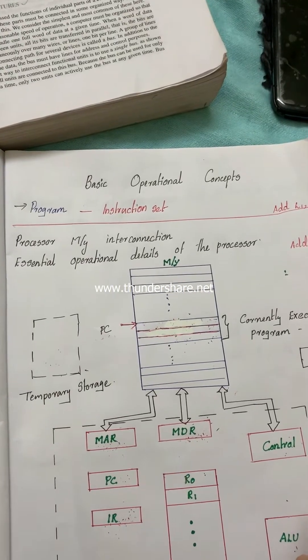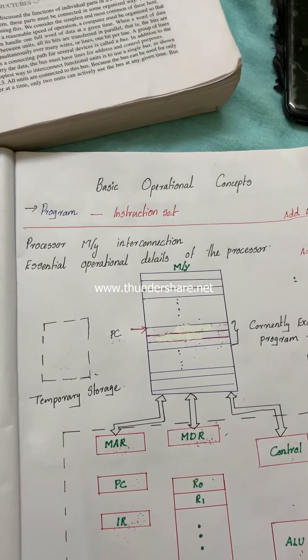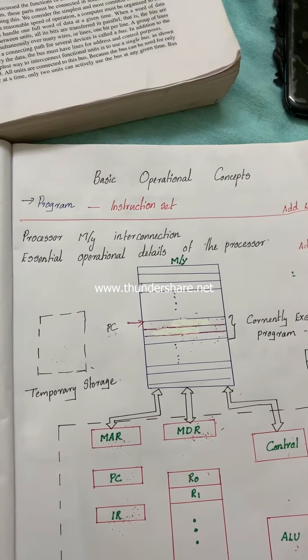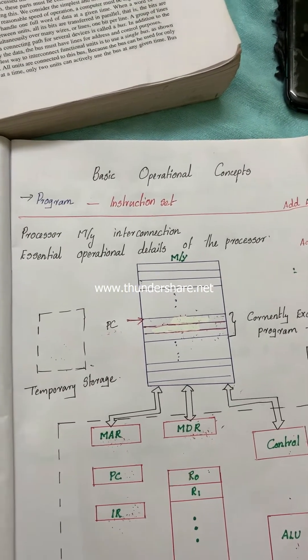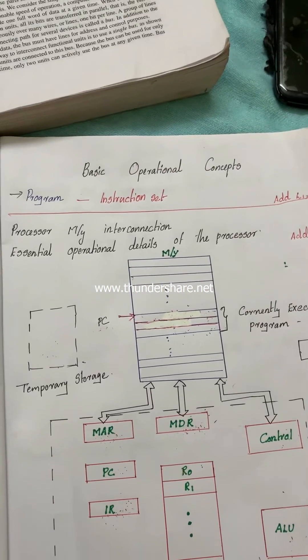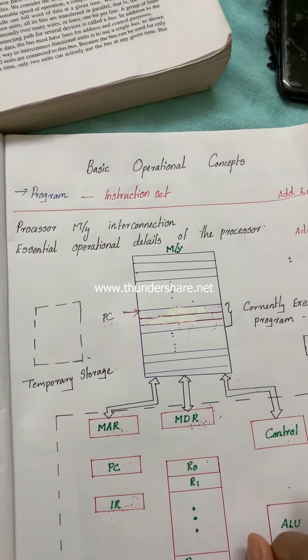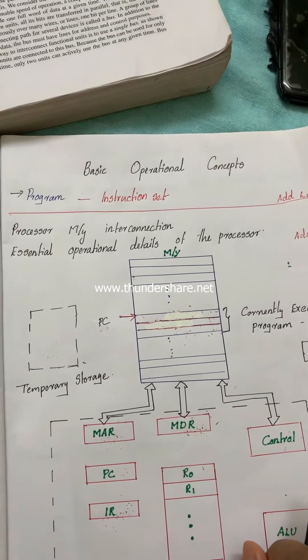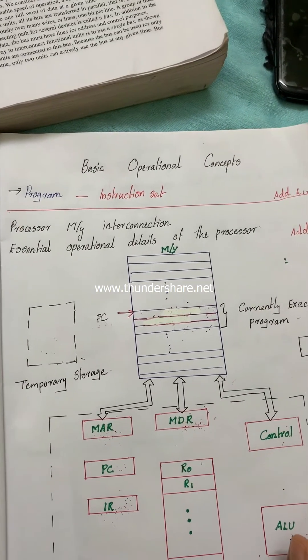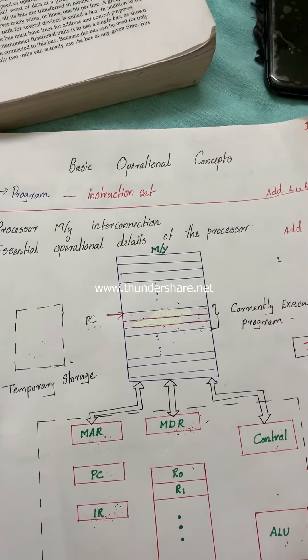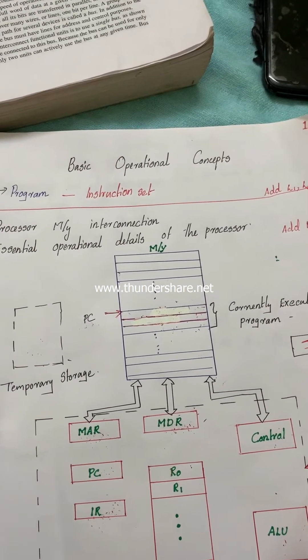One more point we want to know is a processor can access data from memory and write data into memory. Similarly, processor can fetch data from some input devices and also pass data to some output devices directly. For that, it requires some extra machine sequence.